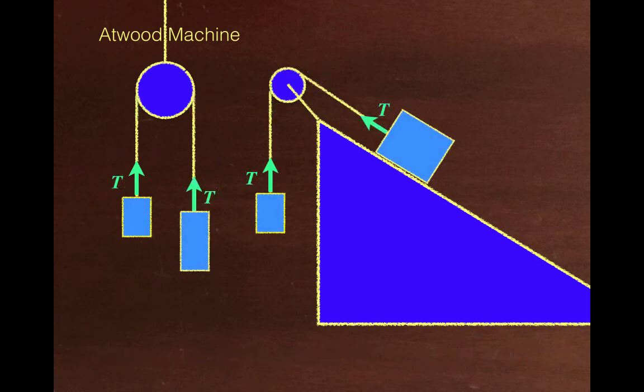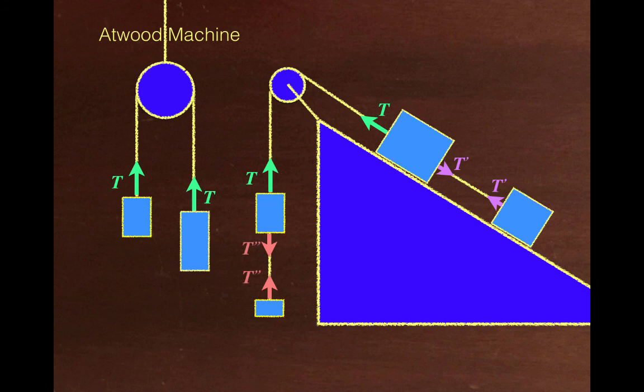Once you know how the tensions work things can just keep getting more complicated. You can add a second mass to the incline and since that's a new string it will have a new tension and you can add another hanging mass and that's another new string so it will have yet another tension. Of course there are other forces too like mg for each block, normal forces, and frictional forces and all of these would need to be considered to proceed with figuring out what's going on here but the point of this video is to focus on tension so I'll just leave it at that.